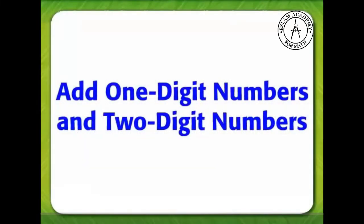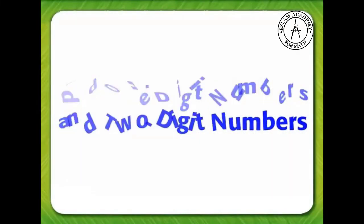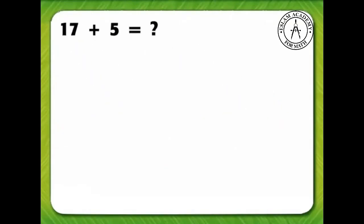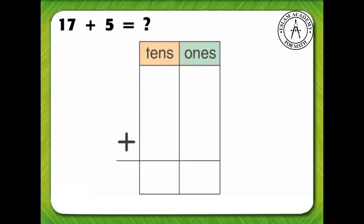Add 1-digit numbers and 2-digit numbers. Find the sum of 17 and 5. We can use the tens and ones chart.